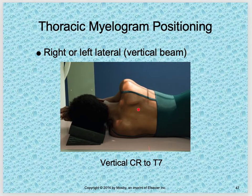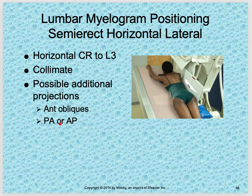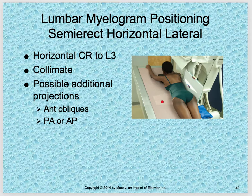For thoracic myelogram with a vertical beam, the patient is placed on their side and a vertical central ray to T7 picks up the T-spine. For lumbar myelogram positioning — semi-erect horizontal beam with the table tilted — rotate the collimator head, do a cross-table L-spine with central ray to L3. Additional projections such as anterior obliques, PA or AP can be done, but mostly imaging is going away except for the cross-table lateral, depending on protocol and what the radiologist wants.